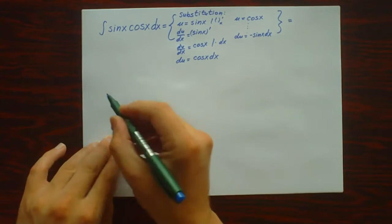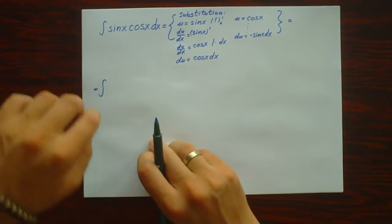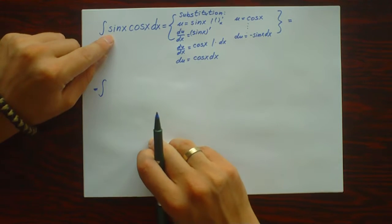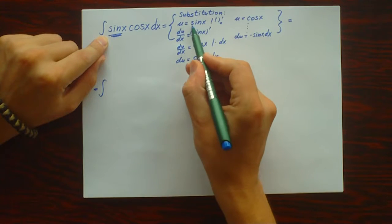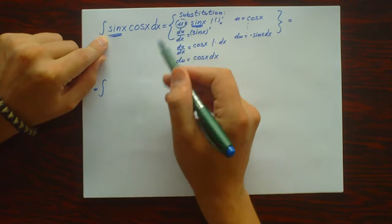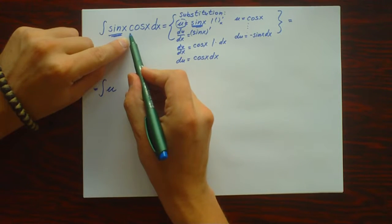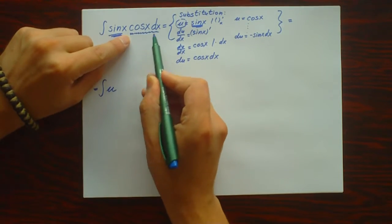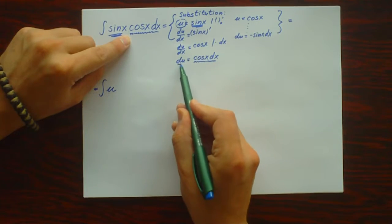So what we get here: the integral—instead of writing sin x, we write u, and instead of writing cos x dx, we write du.